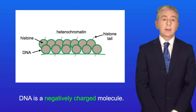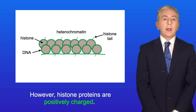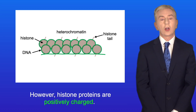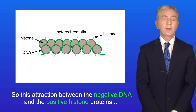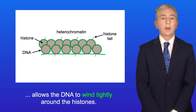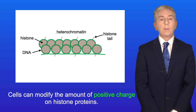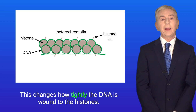DNA is a negatively charged molecule because it contains a large number of negatively charged phosphate groups. However, histone proteins are positively charged. This attraction between the negative DNA and the positive histone proteins allows the DNA to wind tightly around the histones. Cells can modify the amount of positive charge on histone proteins, and this changes how tightly the DNA is wound to the histones.